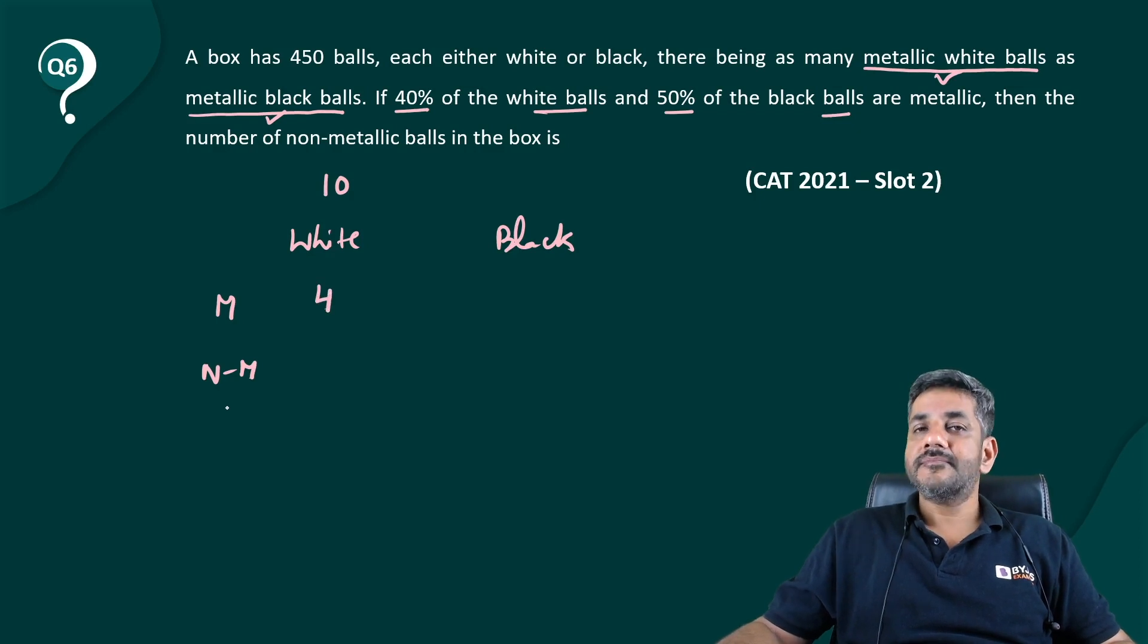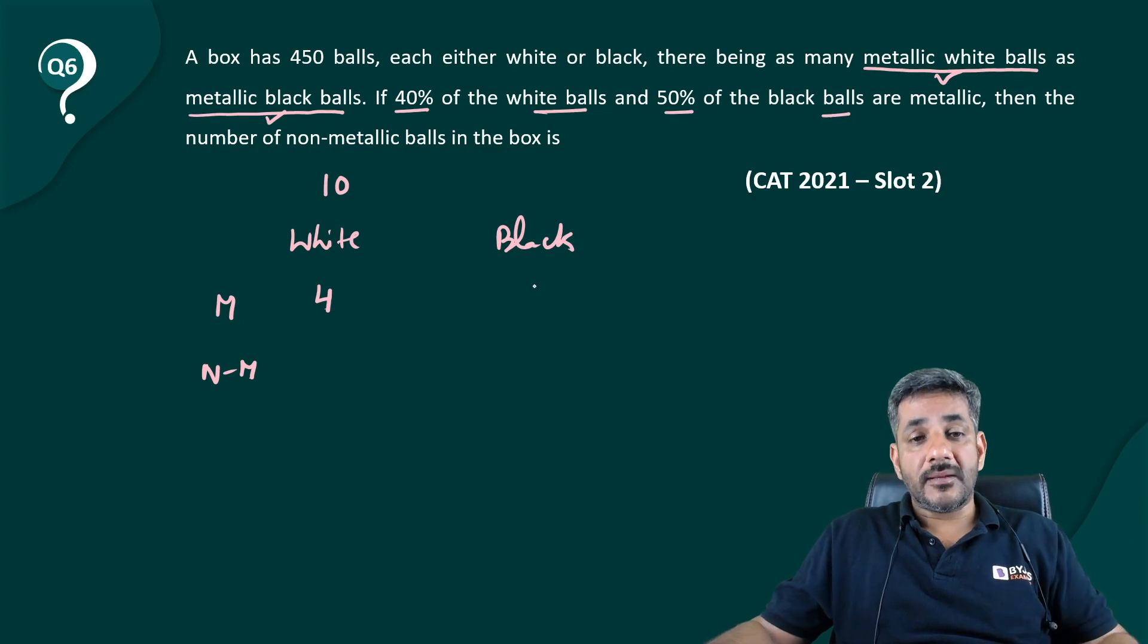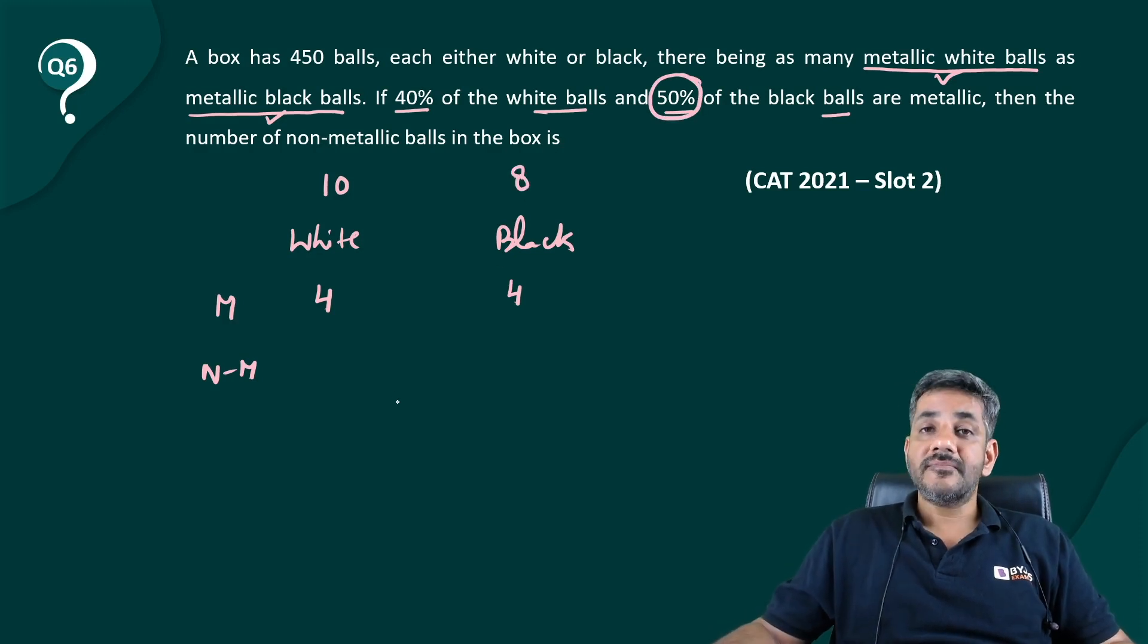So now when metallic white are equal to metallic black, metallic black should also be four. Metallic black are 50% of the black balls, so the number of black balls should be eight.